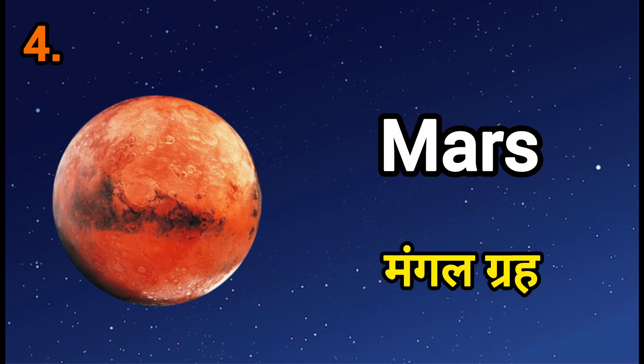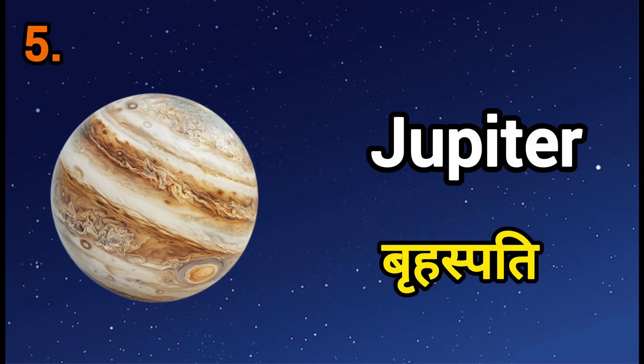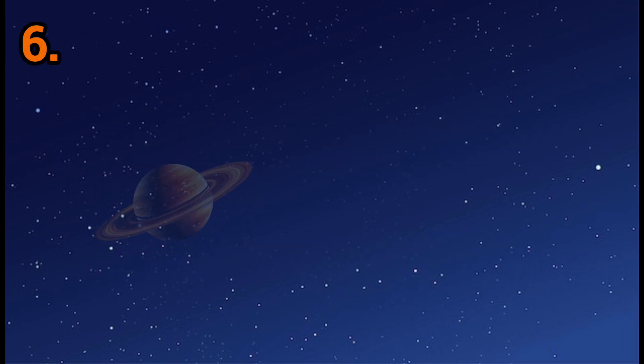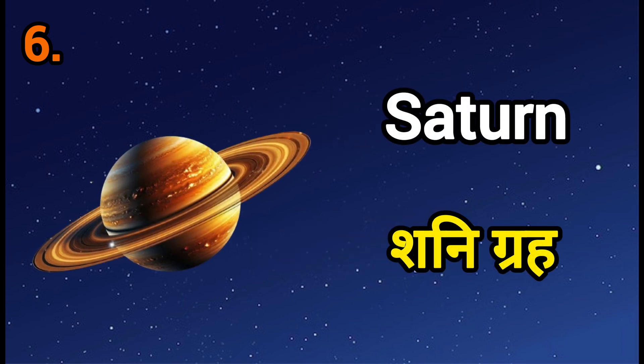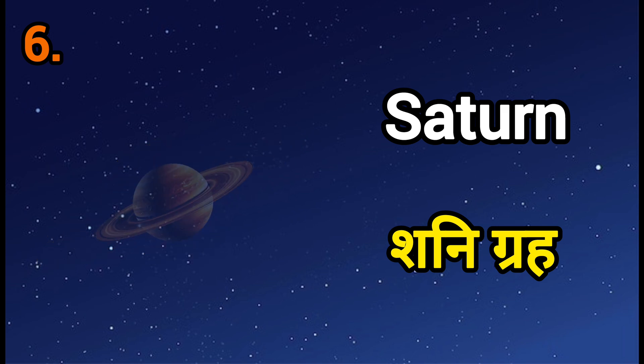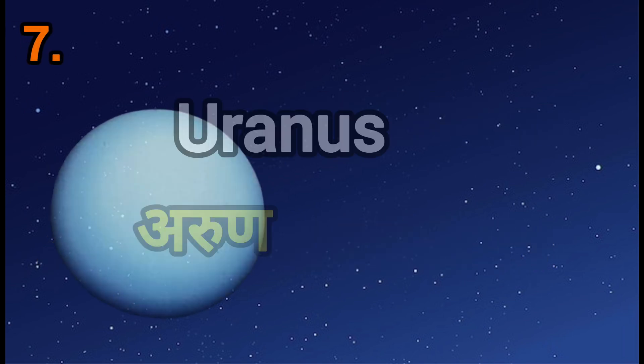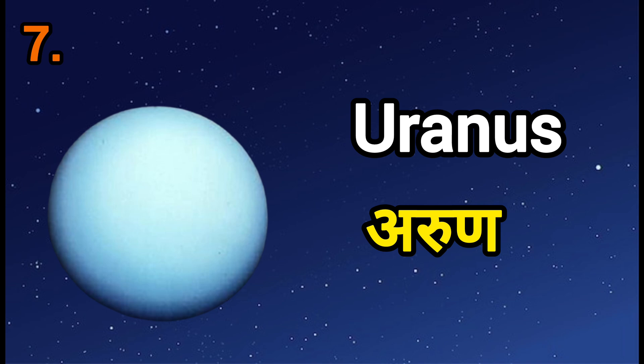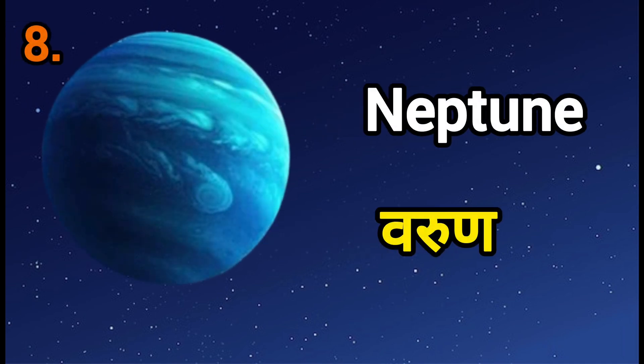Number 5: Jupiter — Jupiter means Brihaspati. Number 6: Saturn — Saturn means Sunnygrah. Number 7: Uranus — Uranus means Arun. Number 8: Neptune — Neptune means Varun.